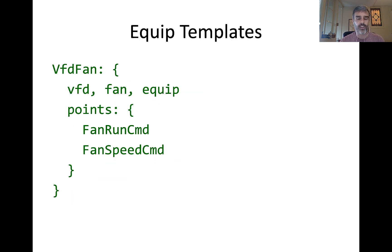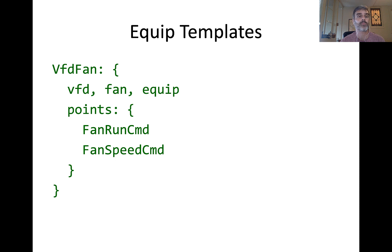We're going to look at this in detail in some of the videos, but this is a very simple equipment template showing what an equipment type might look like. You can see here I've given it a type name. This particular template, which is a VFD fan, requires the VFD tag, the fan tag, and the equipment tag. And then I'm requiring two specific point types: a fan run command and a fan speed command. Those would be somewhere else in your library. This is just to give you a quick overview of what a particular equipment template might look like.